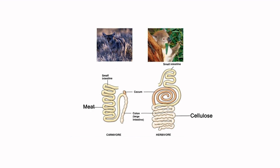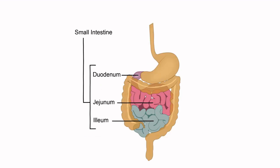The small intestine consists of three parts: the duodenum, the C-shaped first part; the jejunum, the coiled midsection; and the ileum, the final section that leads into the large intestine.